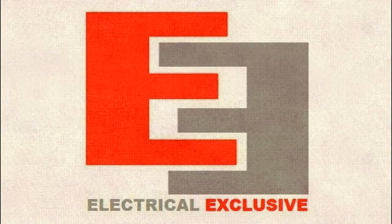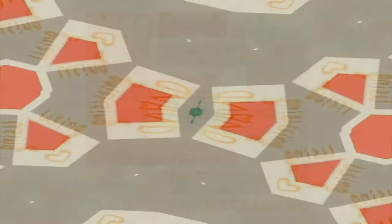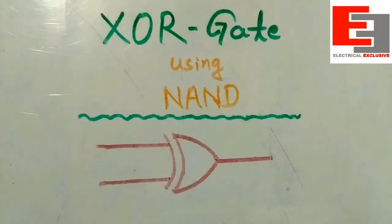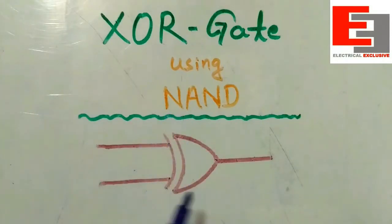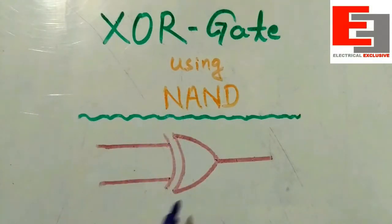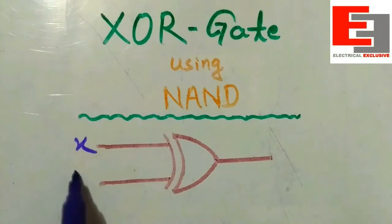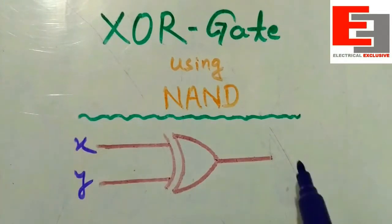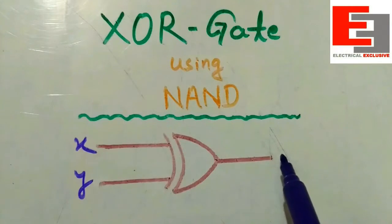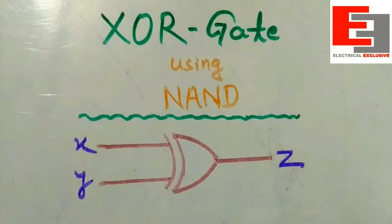Hello friends, welcome to a fresh new episode presented by Electrical Exclusive. In this episode we shall try to implement the logical equivalent of the XOR gate by using NAND gates. This is the schematic symbol of the XOR gate, which has two inputs X and Y, and on the other end this is the output terminal Z.